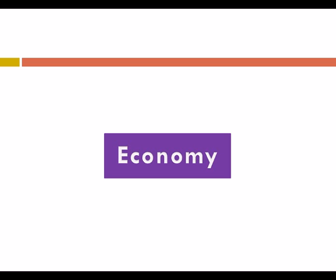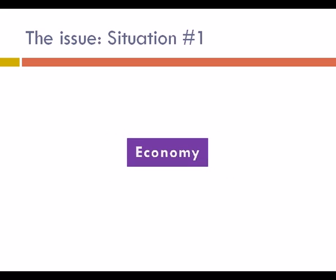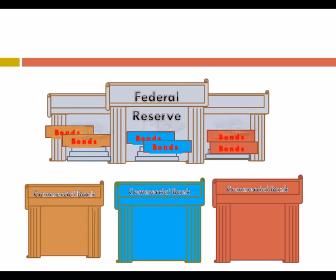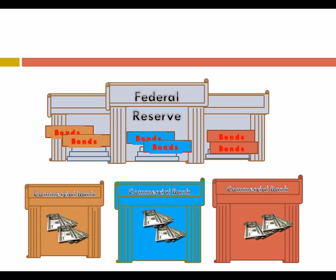Why would the Fed want to change interest rates? Assume the economy is contracting rapidly. All banks around the country have a variety of financial products, one of them being bonds. What the Federal Reserve does is buy these bonds from banks, and by buying them they are essentially putting more money into the financial system, thereby increasing the money supply.